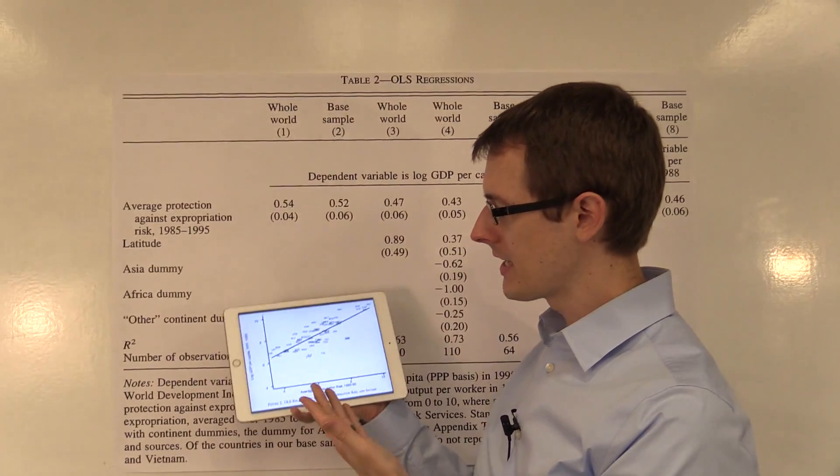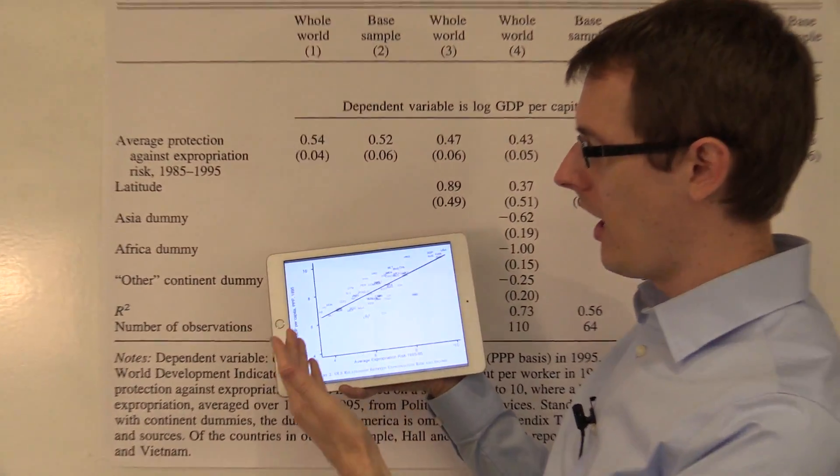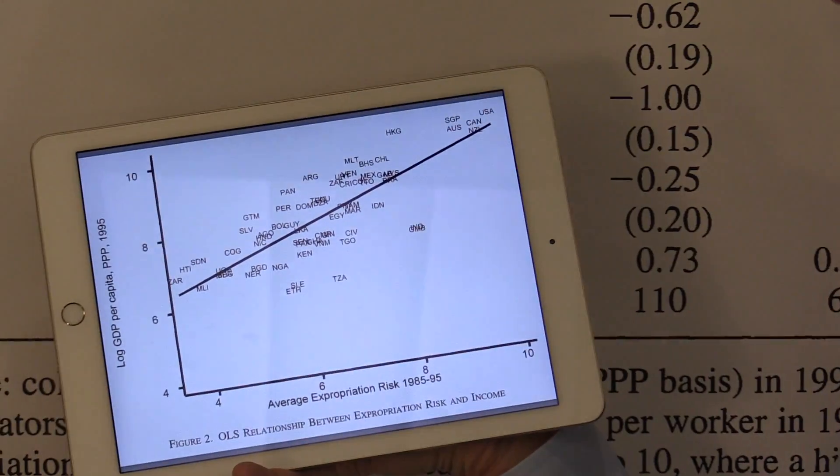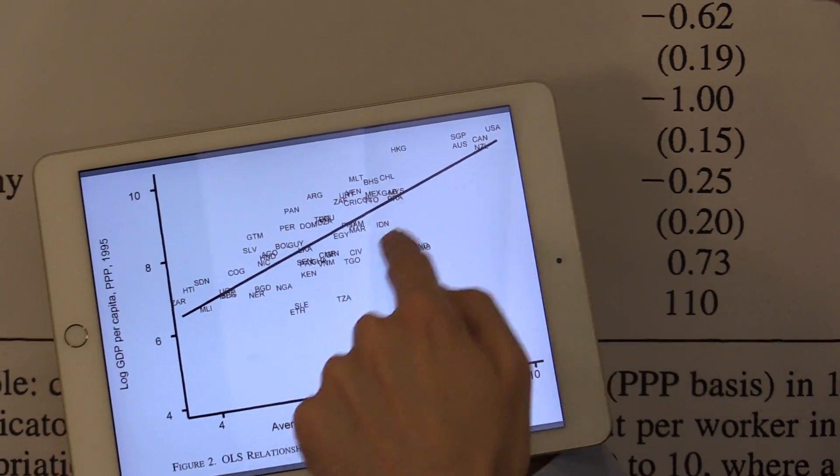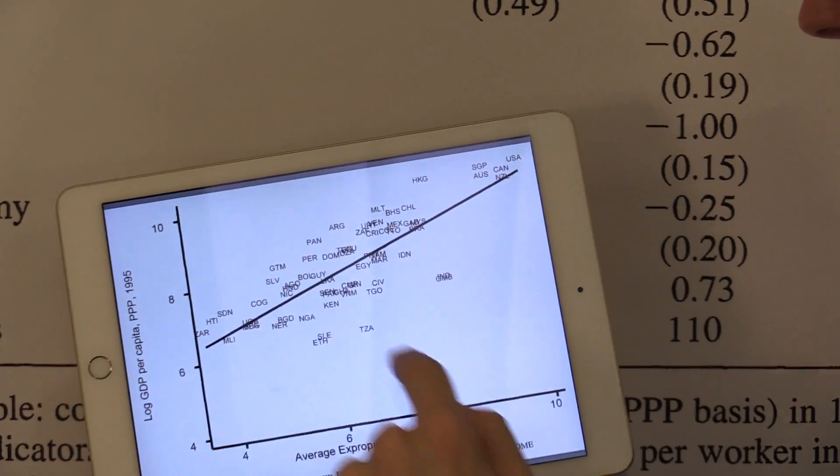So here's how it works. Let's look at this scatter plot again of the relationship between economic growth and property rights. You've got all your data points shown, each country, all in this cloud here.